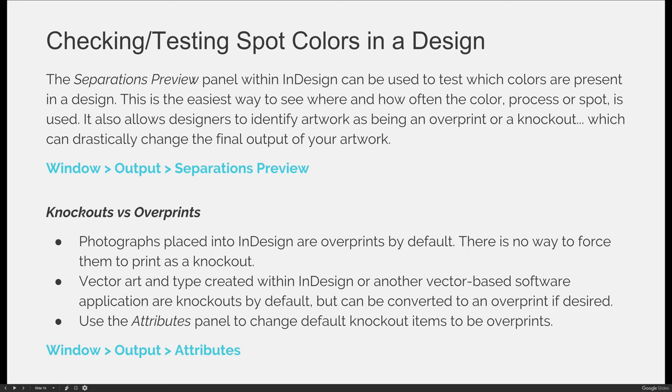Some fun facts about knockouts and overprints: photographs placed into InDesign are overprints by default, and there's no way to force them to print as a knockout. If you want to print a photograph, you must have a blend of cyan, magenta, yellow, and black to create that full color image — you cannot print a photograph as spot colors because you would need millions of colors. Vector art and type created directly inside InDesign or any vector-based software like Adobe Illustrator will be a default knockout.